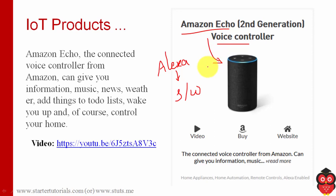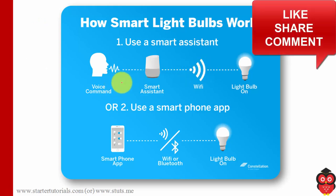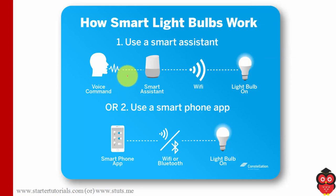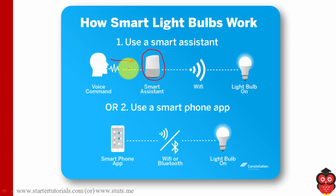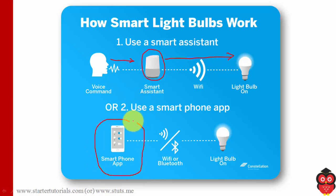Alexa is software whereas Amazon Echo is hardware — it's a device. You can imagine Alexa as software running on hardware. Now, let's see how a smart light bulb works. You will have a smart assistant installed in your house — it can be Google Home, Amazon Echo, or similar. You give the voice command and it sends the command through Wi-Fi or Bluetooth to the appropriate device. You can also use a mobile app to send commands through the user interface.